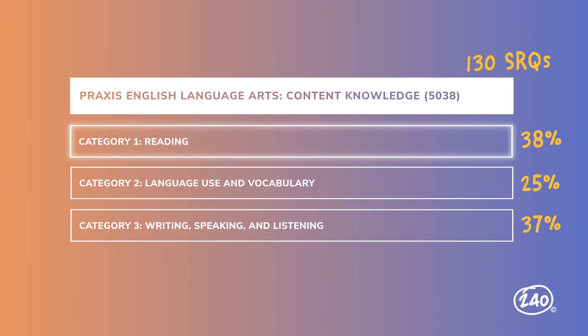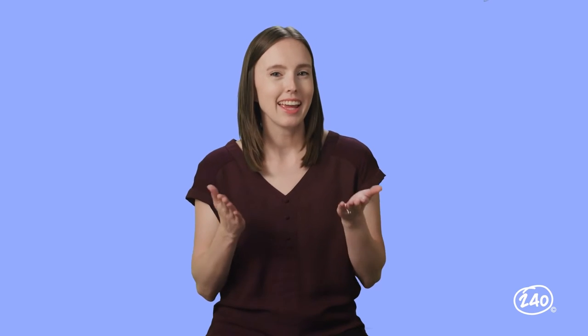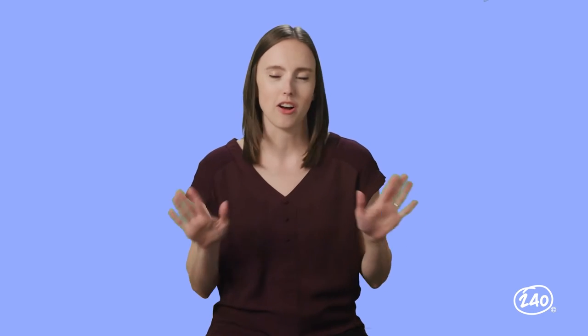In the reading category you'll see questions about both literature and informational texts and rhetoric. This category covers a lot. You'll see questions about characteristics of different genres, questions about teaching reading in the secondary classroom, and questions based on passages. So you'll need to know about reading, know how to teach reading, and know how to read and analyze text all at the same time. The good news is we have all of this covered in our study guide.